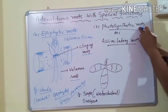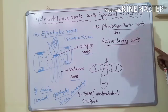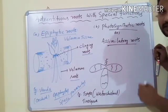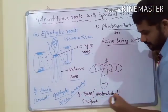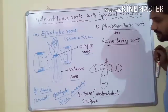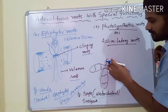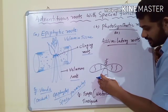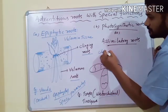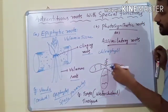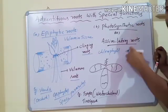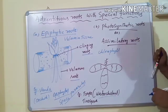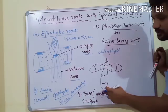Another special Adventitious Root modification is Photosynthetic Roots, also called Assimilatory Roots. In plants like Trapa and Tinospora, the stem and leaves are highly reduced. Trapa is the common name for water chestnut, a submerged hydrophytic plant. In such conditions, the roots become green leaf-like structures and develop chlorophyll, enabling them to perform photosynthesis and make their own food. Such roots are called Photosynthetic or Assimilatory Roots.